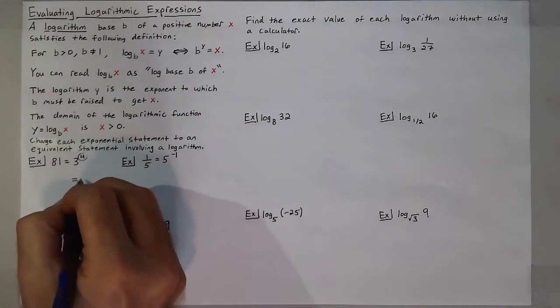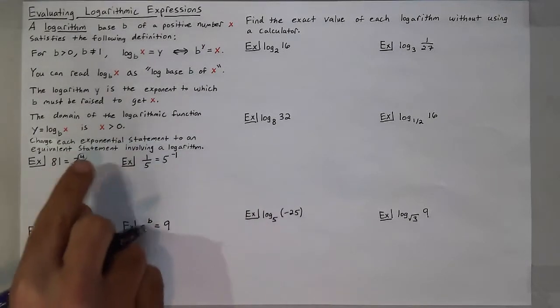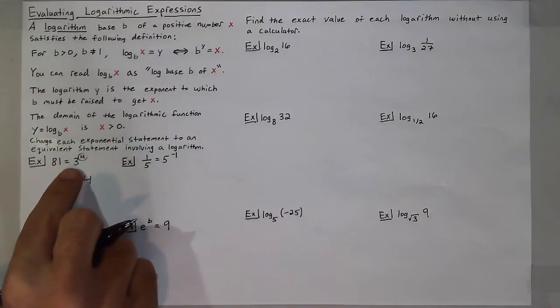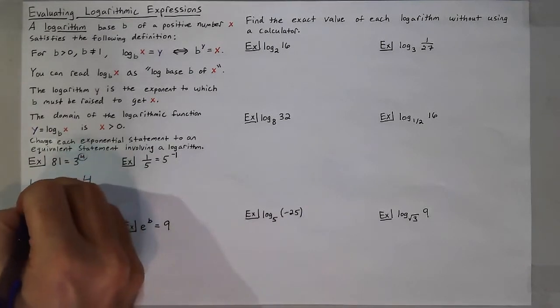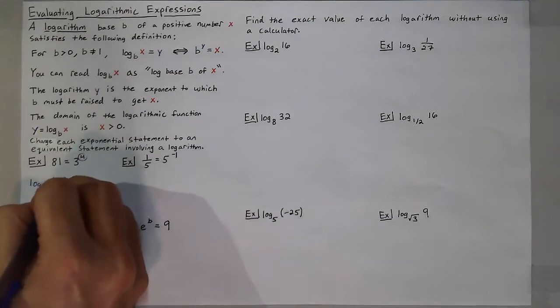So I know that the logarithm is equal to 4. And the base of the logarithm is the base of the exponential statement. So log base 3 of 81 is equal to 4.